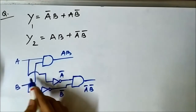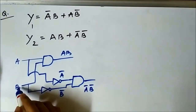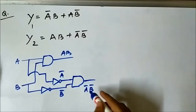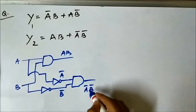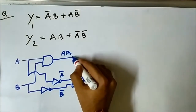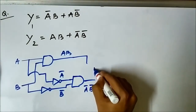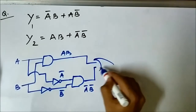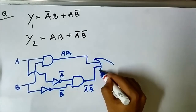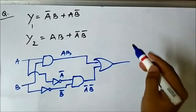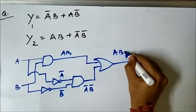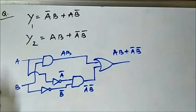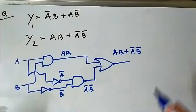a·b is directly passed through an AND gate. Then a is passed through a NOT gate to get ā, and b is passed through a NOT gate to get b̄. These two signals are ANDed together to get ā·b̄. Finally, a·b and ā·b̄ are passed through an OR gate to get the final output a·b + ā·b̄.